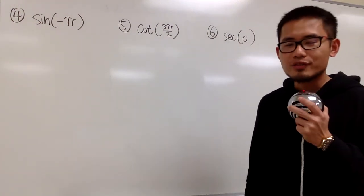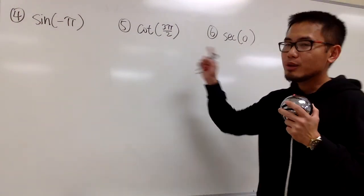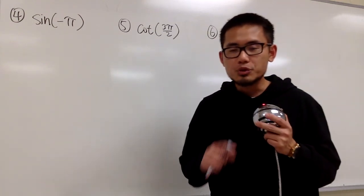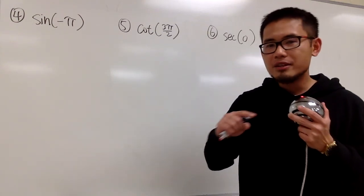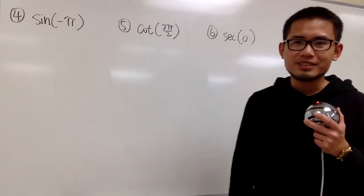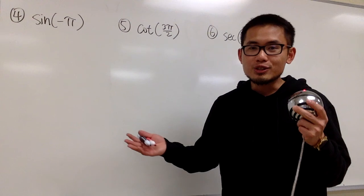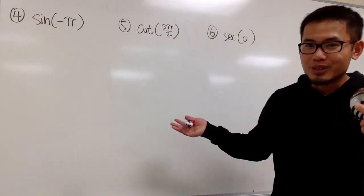I'm going to show you how to find the exact values of some trig functions. This time, these angles are the quadrantal angles. When we draw the picture, we will end up either on the x-axis or the y-axis. So in these situations, we cannot really use the reference triangle because we cannot have a triangle in the first place.